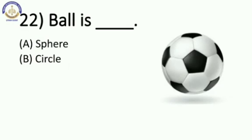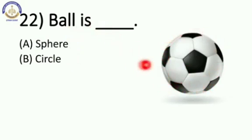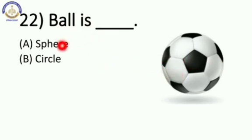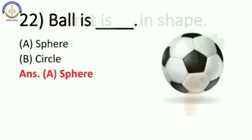Now next: a ball is blank. Bacchon, yeh aapko exam mein nahi aayega — yahan pe mein aapki understanding ke liye hi isse rakha hai. A ball is blank — sphere or circle? Ball is sphere. This is not circle, okay? This is sphere. Option number A, sphere.